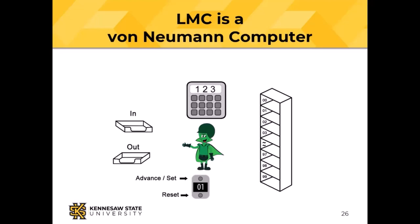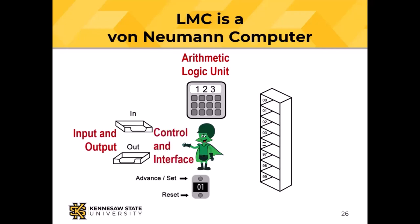The calculator stands in for the arithmetic logic unit of a real computer. In and out baskets are input and output. The little man is both control unit and interface. The memory — those are the mailboxes — has addresses 00 to 99, so there are 100 memory locations. The program counter is a counter all by itself. The little man computer is a von Neumann architecture computer.